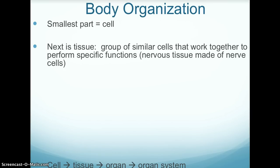The cell is followed by tissues. A tissue is a group of similar cells that work together to perform specific functions. For example, nervous tissue is made of nerve cells.